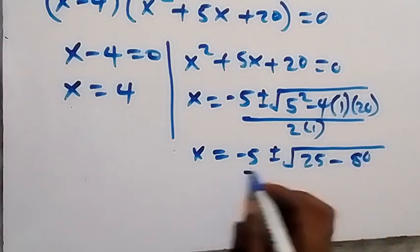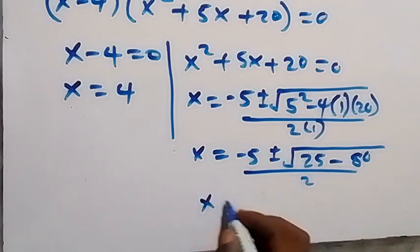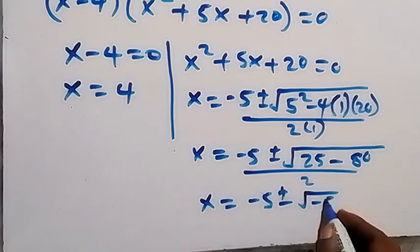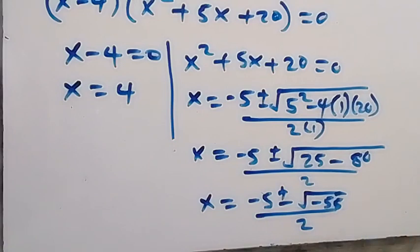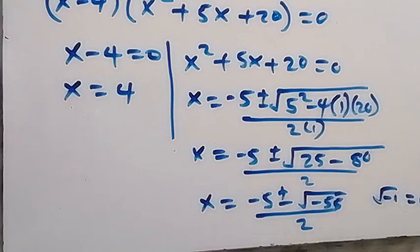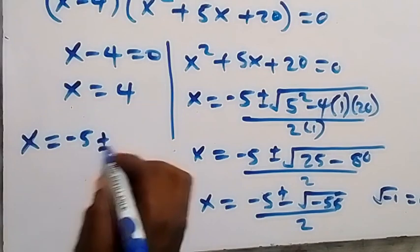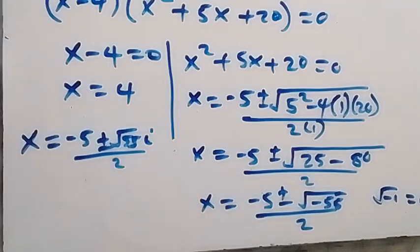Since 25 − 80 = −55, we have x = (−5 ± √(−55)) / 2. We can write √(−55) = √55 · i, where i = √(−1). So x = (−5 ± √55 · i) / 2.